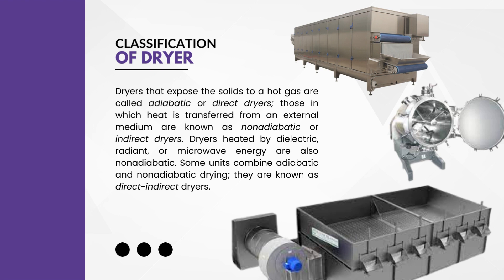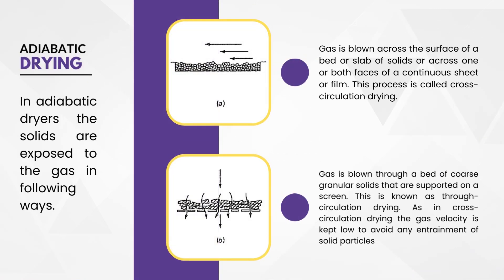In the case of adiabatic dryers, let's understand cross-circulation drying with an example. Imagine you have a piece of paper that is wet and you want to dry it. You can use a fan to blow air across the paper and dry it faster. This is cross-circulation drying because the air moves across the surface of the paper and takes away the moisture. This method can also be used for a bed of grains, a slab of cheese, or a sheet of plastic. The air can be blown across one side or both sides depending on the arrangement.